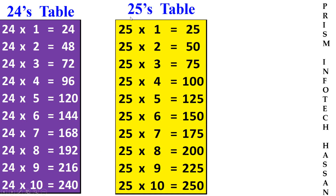25's table. 25, 1 times 25. 25, 2 times 50. 25, 3 times 75. 25, 4 times 100. 25, 5 times 125.